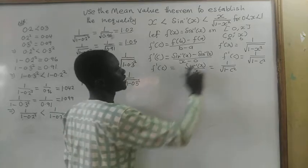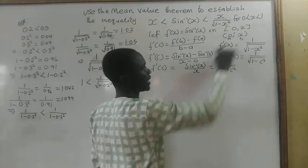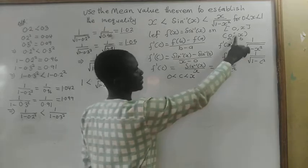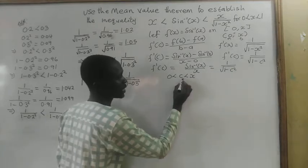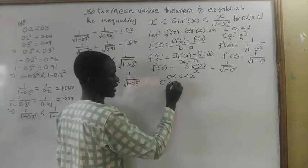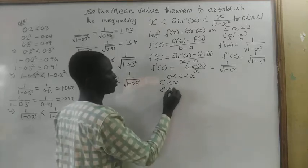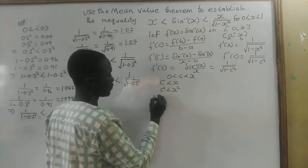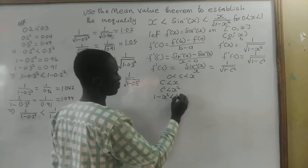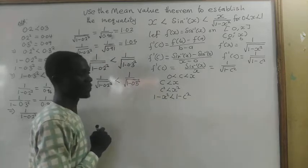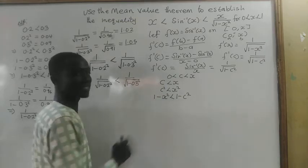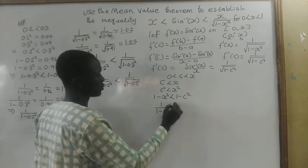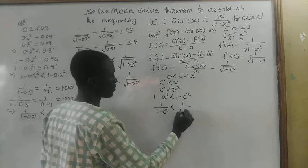If we consider this open interval, we have 0 is less than c and c is less than x, since c is between 0 and x. Now, if we have c less than x, then c squared will still be less than x squared. Therefore, 1 minus x squared will be less than 1 minus c squared. If we take the reciprocal, 1 divided by 1 minus c squared will now be less than 1 divided by 1 minus x squared.